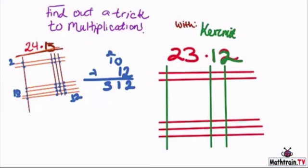Okay, so now let's count up our intersections. Alright, so here's 1, 2, 3, 4, 5, 6, and then here's 1, 2, 3, 4, 5, 6, 7. And then here is 2.